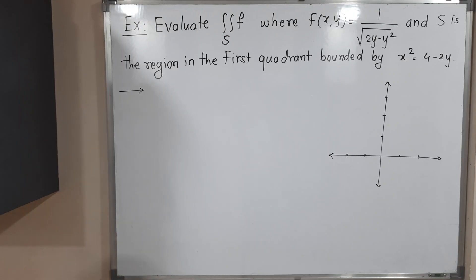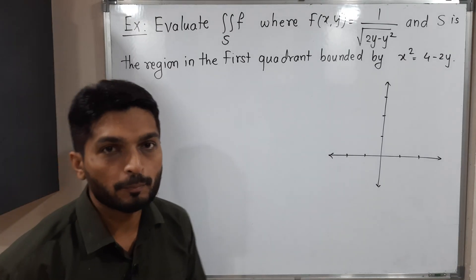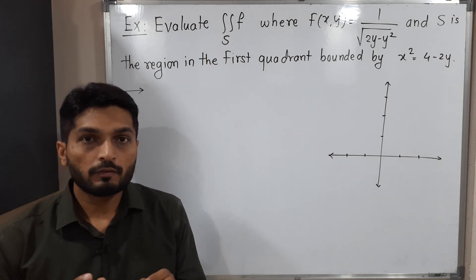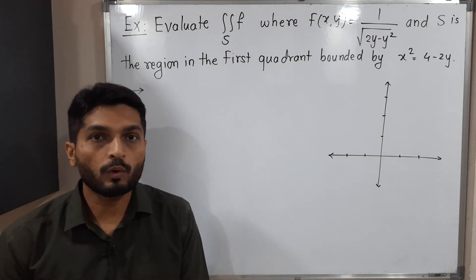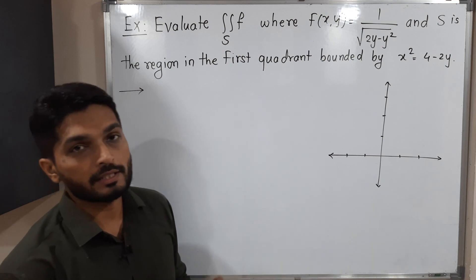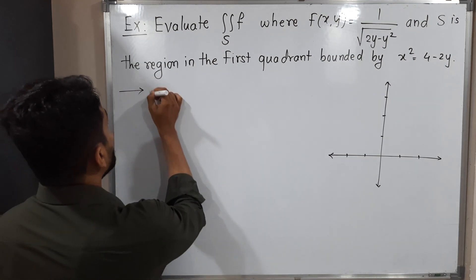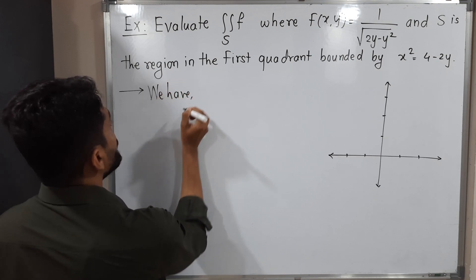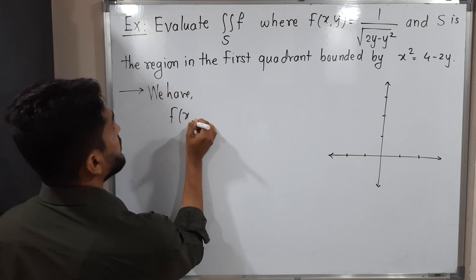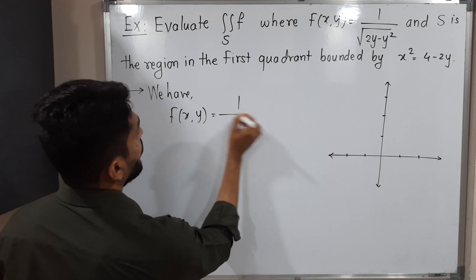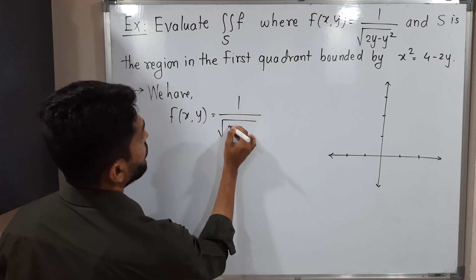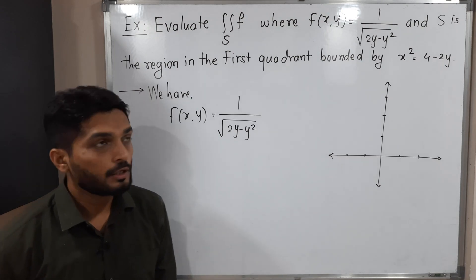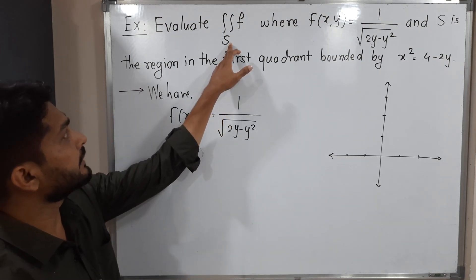Hi everyone. In this video we are going to discuss this example. Here we have to find the value of this double integration — double integration of function f over S. Our function is f(x, y) = 1 / √(2y − y²).